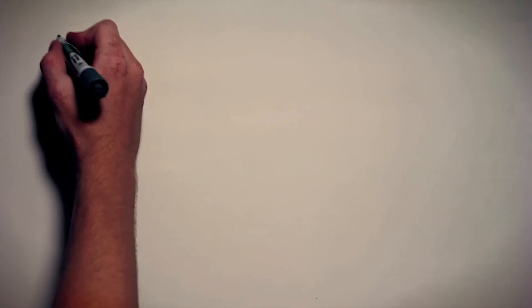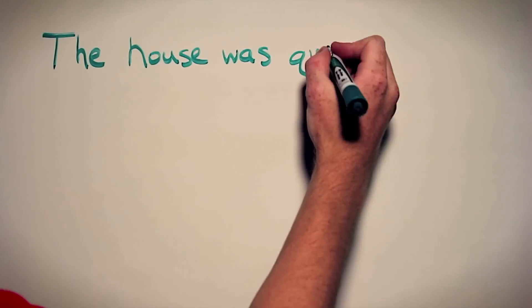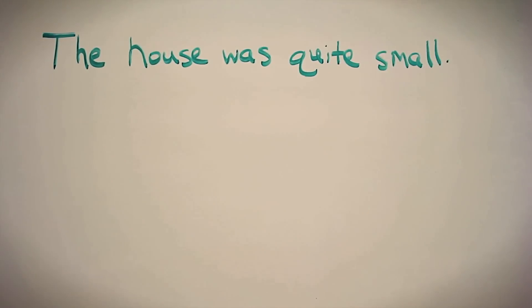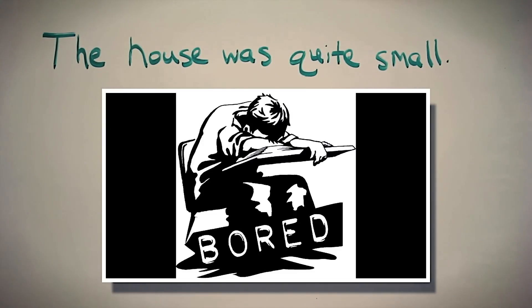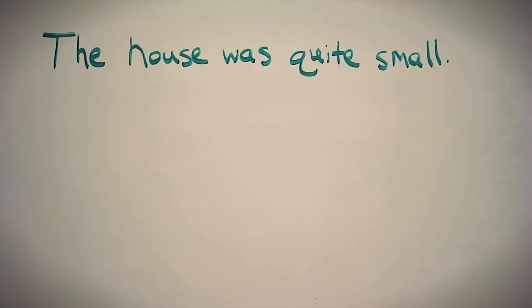So here is our first example sentence: The house was quite small. Now as you can see, this is pretty bland and very non-specific. In this example we are going to focus on the word house. If you were to read this over and over again, you would probably get bored.